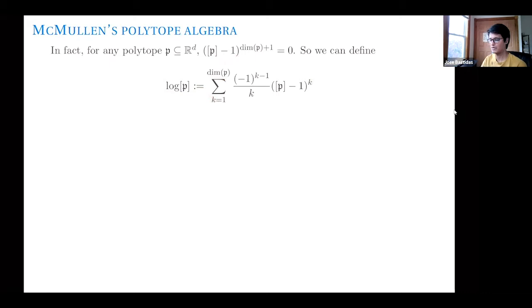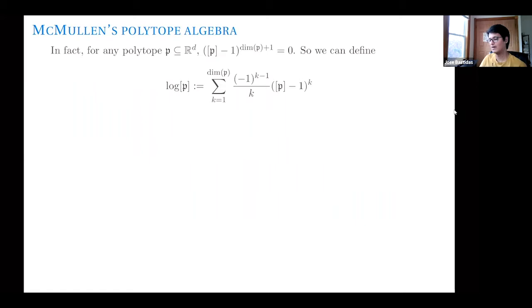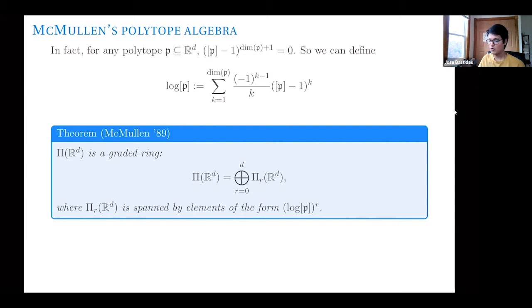A question from the audience: why is that power equal to zero? It's not so easy — it's something that you have to verify. This is just an example of why it's true, at least for a triangle, but it is not trivial. It is true. With this we can say a little bit more about the ring structure of this algebra: it is a graded ring, and the graded components are generated as a group by elements of the form log of a polytope raised to the r-th power.